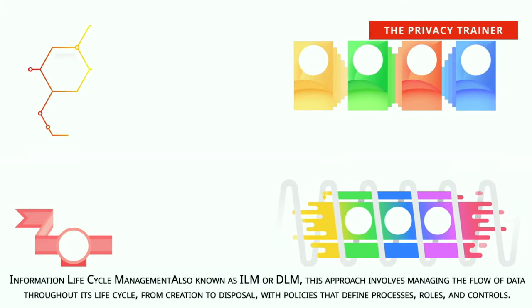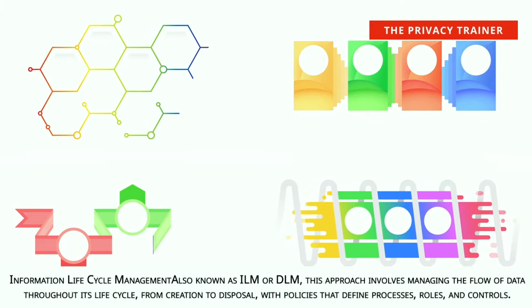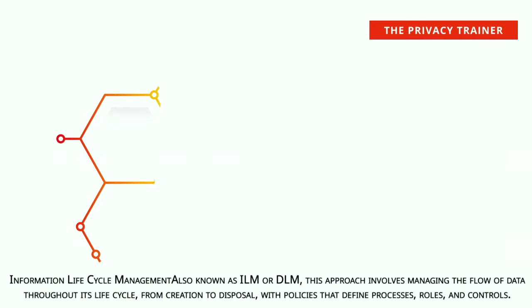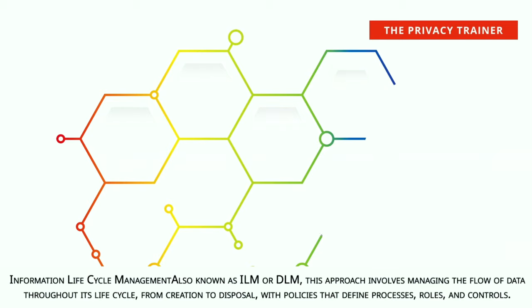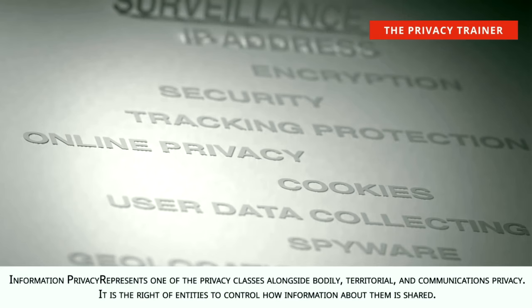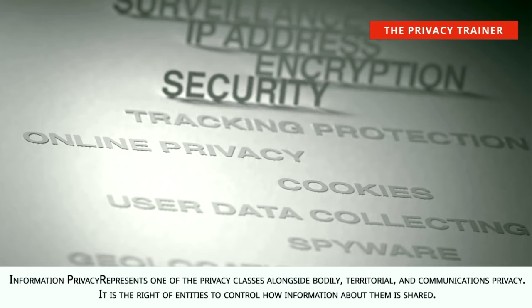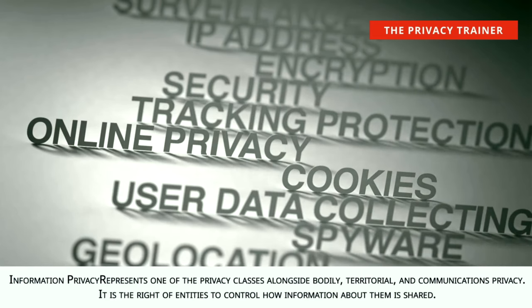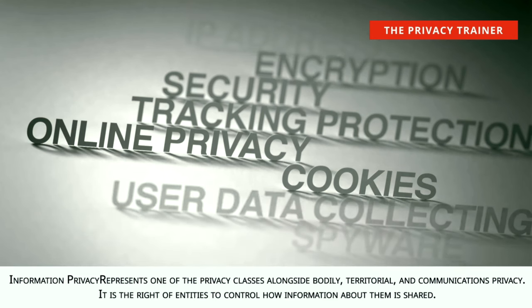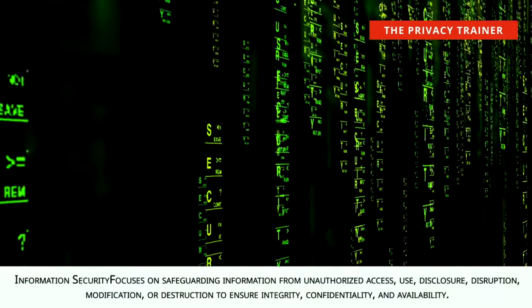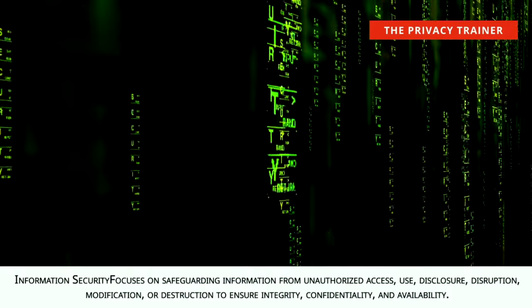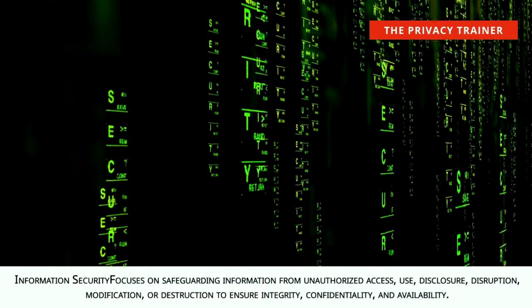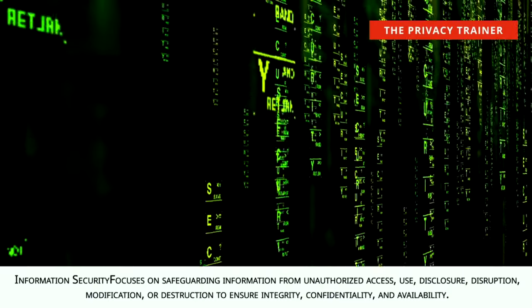Information lifecycle management, ILM or DLM. Involves managing the flow of data throughout its lifecycle, from creation to disposal, with policies that define processes, roles, and controls. Information privacy. Represents one of the privacy classes alongside bodily, territorial, and communications privacy. It is the right of entities to control how information about them is shared. Information security. Focuses on safeguarding information from unauthorized access, use, disclosure, disruption, modification, or destruction to ensure integrity, confidentiality, and availability.